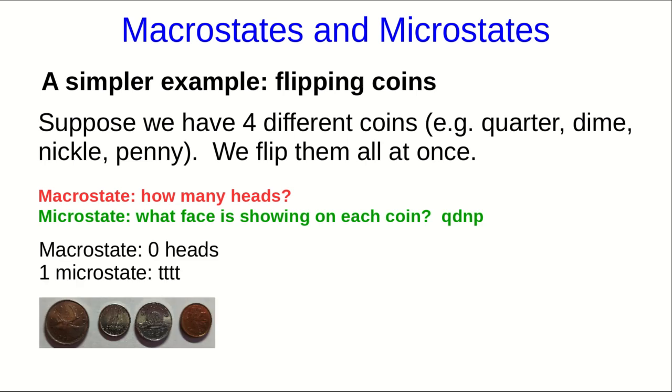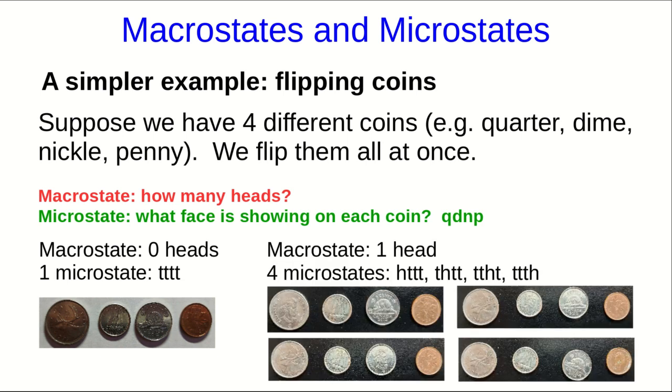So, for example, the macrostate of zero heads has only one corresponding microstate, because all of the coins are tails up. Whereas the macrostate of one head has four microstates. The quarter could be heads up, the dime, or the nickel, or the penny.